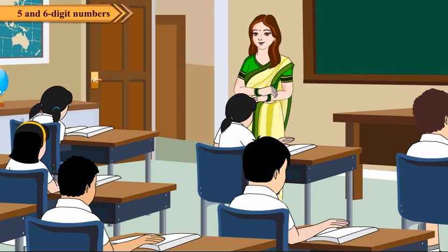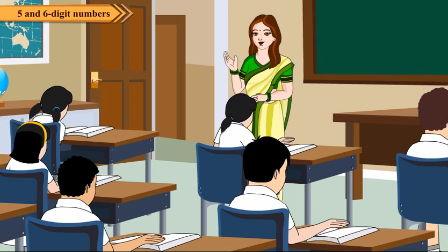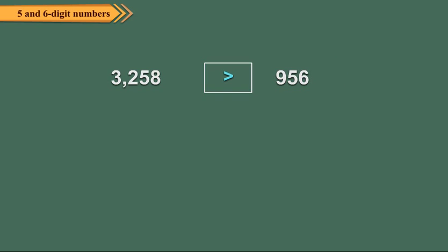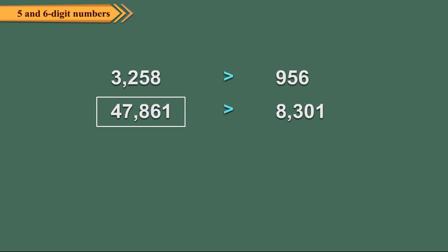Do you remember how to compare small numbers? To compare large numbers, we follow the same rules. A number having more digits is greater than the other. For example, 3258 has 4 digits and 956 has 3 digits, so 3258 is greater. Similarly, 47861 is greater than 8301 because it has 5 digits and 8301 has only 4 digits.